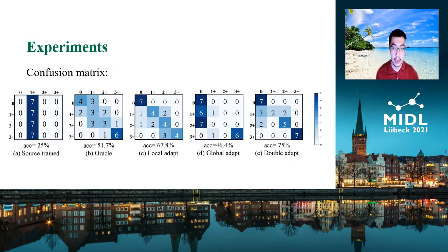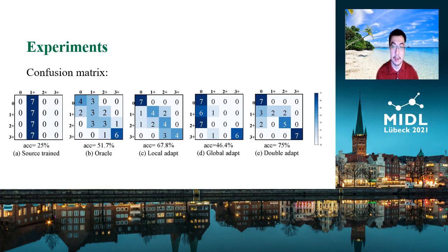The source-trained model in table A and the oracle model in table B show the accuracy drop caused by the domain gap in Whole Slide Images. Tables C and D show that both local stage and global stage adaptation can help increase accuracy. The local stage adaptation has better influence across all categories, while global stage adaptation provides better separation between category zero and category three-plus. The double-stage adaptation in table E provides the best accuracy and confusion matrix compared to single-stage adaptation. Notably, since the CCI training set is significantly larger than the Warwick dataset, the increased accuracy also suggests our solution may generalize to scenarios where a model is trained on a larger dataset and adapted to a smaller one.